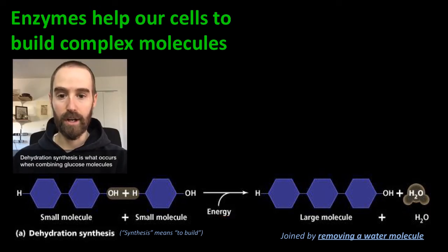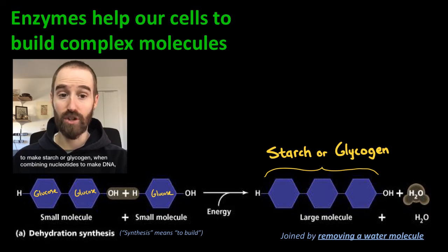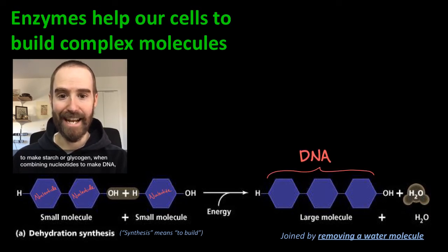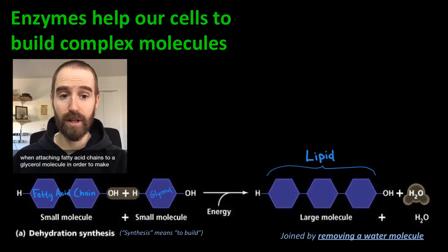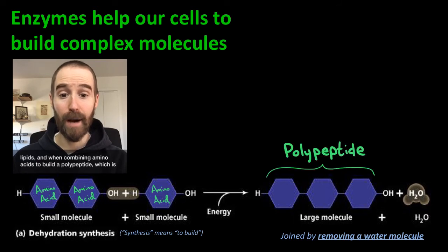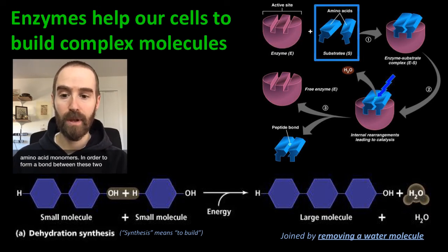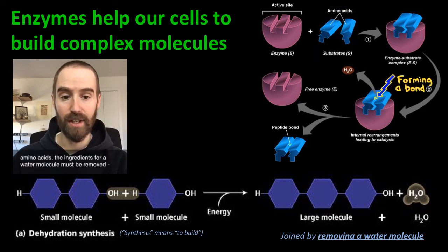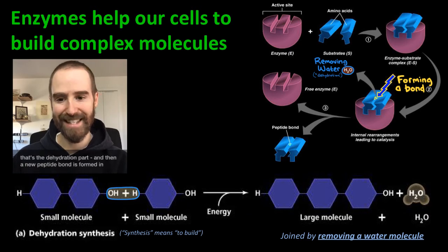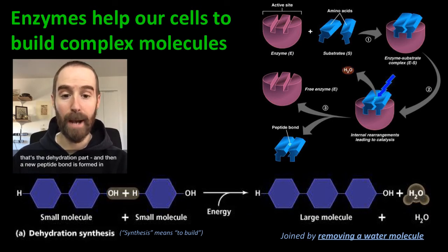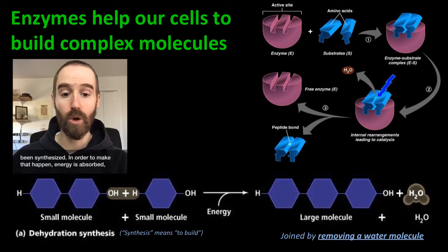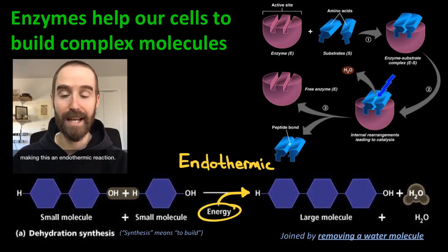Dehydration synthesis is what occurs when combining glucose molecules to make starch or glycogen, when combining nucleotides to make DNA, when attaching fatty acid chains to a glycerol molecule in order to make lipids, and when combining amino acids to build a polypeptide — which is what we see happening here in this model. The substrates are these two amino acid monomers. In order to form a bond between them, the ingredients for a water molecule must be removed — that's the dehydration part. Then a new peptide bond is formed in place of the atoms that were removed, and our polypeptide has been synthesized. In order to make that happen, energy is absorbed, making this an endothermic reaction.